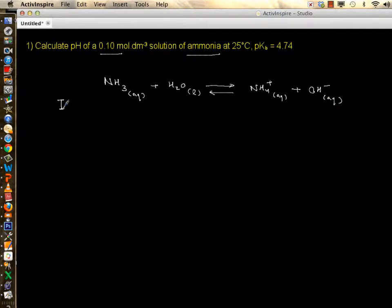We do ICE calculation. Initially you have 0.10, and you have none of ammonium, none of hydroxide. Once there is a change, you lose a small amount of ammonia, x mole, and you produce the same amount on the product side.